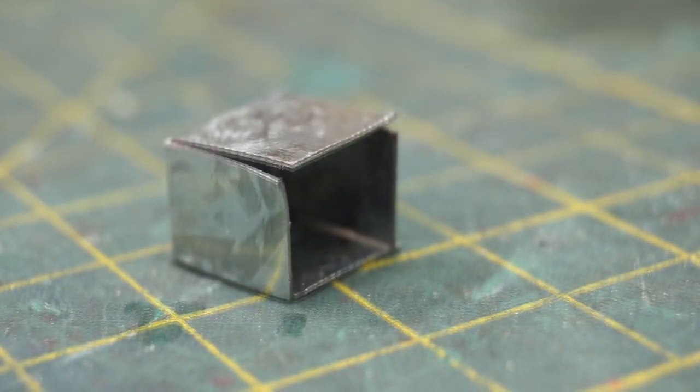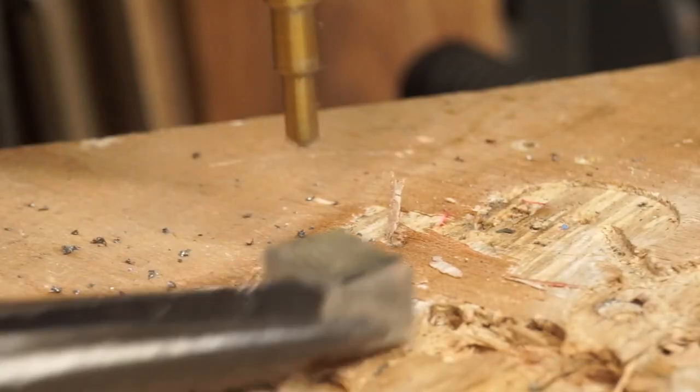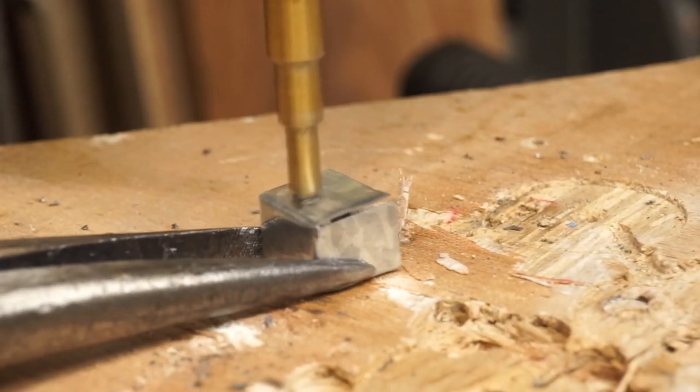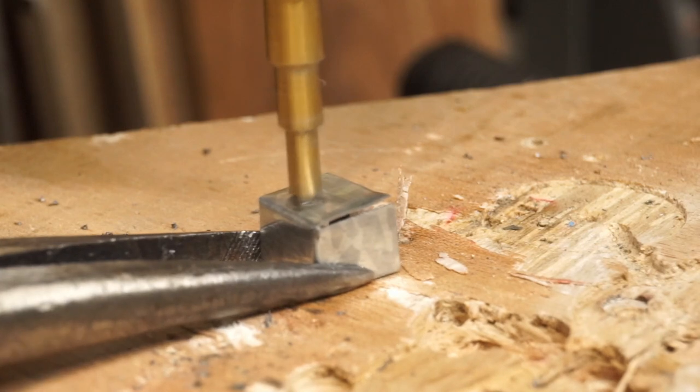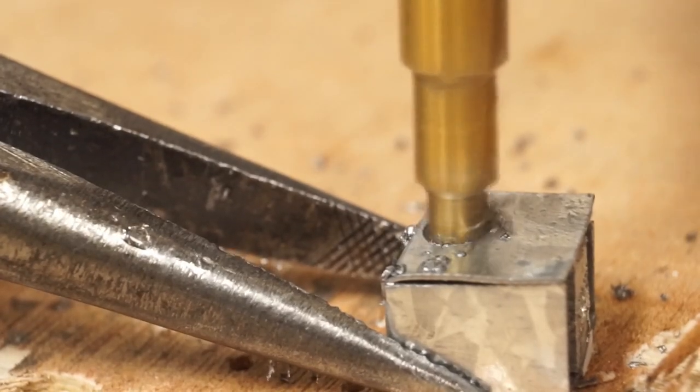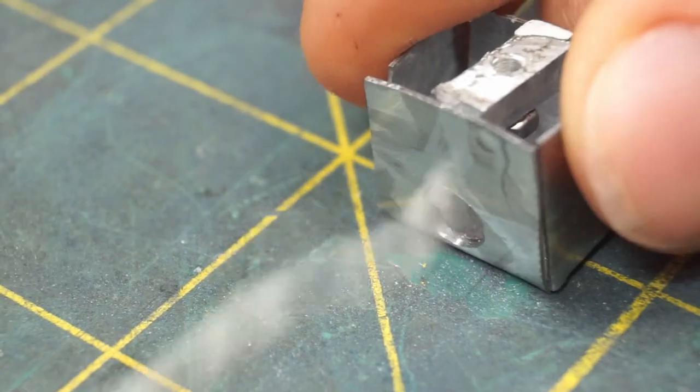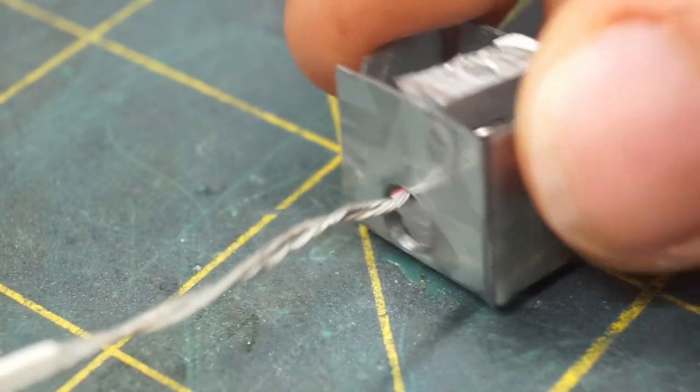One quick thing. Before I start soldering, I need to drill a hole in the side of this receptacle's electrical box for the wires to go through. And with the wires fed through the box, it's time to solder.